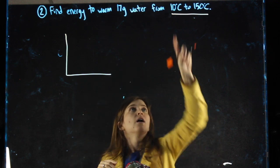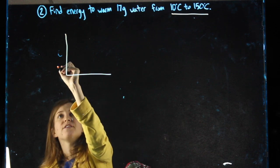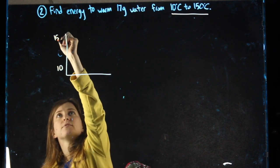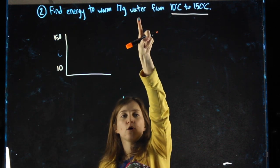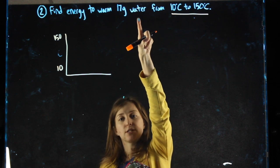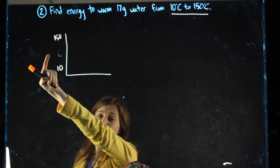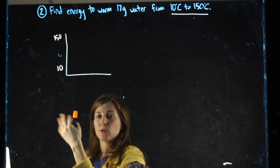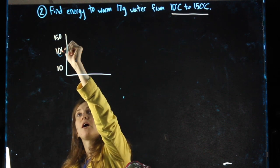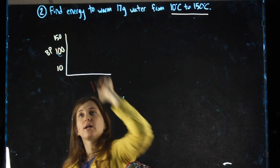Starting at 10, going to 150. Since it's water, the only other points I might care about are zero, the melting point, and 100, the boiling point. Between 10 and 150, I'm never going to encounter zero, so I don't care about it. I do care about 100, which is my boiling point.